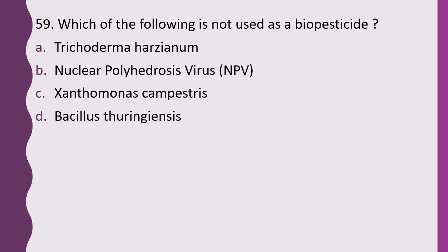Question 59. Which of the following is not used as a biopesticide? Trichoderma harzianum, nuclear polyhedrosis virus, Xanthomonas campestris, or Bacillus thuringiensis. The correct answer is option C — Xanthomonas campestris is not used as a biopesticide.